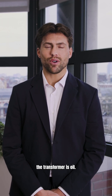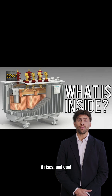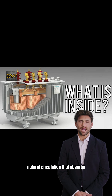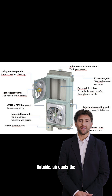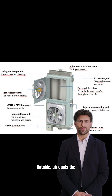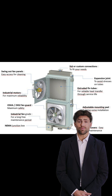Now it gets interesting. With Oil Natural Air Natural, or ONAN, inside the transformer is oil. As the oil heats, it rises, and cool oil falls, creating a natural circulation that absorbs heat. Outside, air cools the radiator fins. This is the most commonly used method, known for being reliable and low cost.